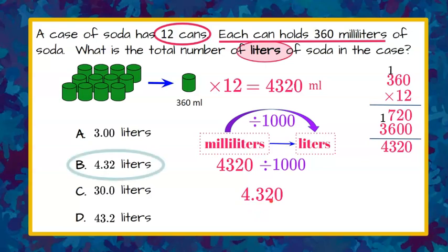So now we're ready to check our answer and we can see that it's answer choice B. This zero is not significant. So this is 4.32 liters as our answer.